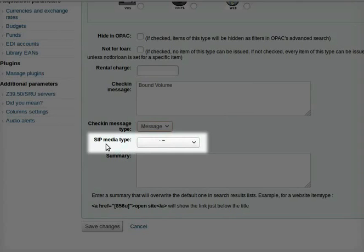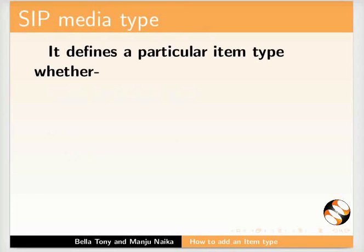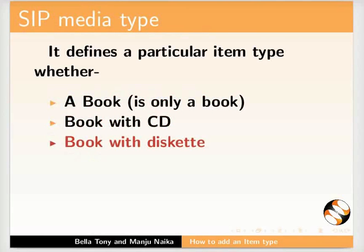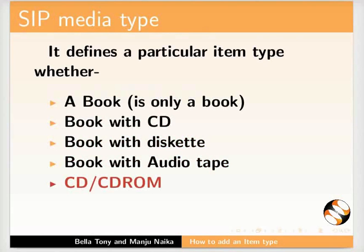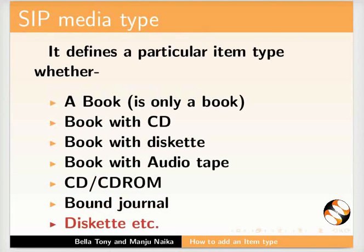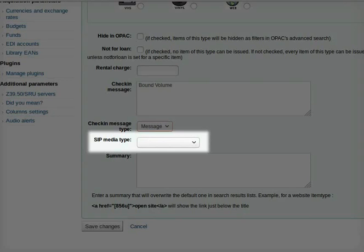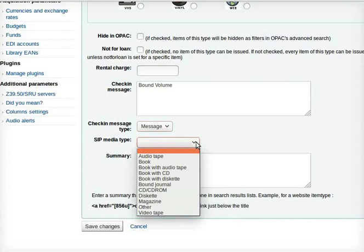Next is SIP media type. It categorically defines a particular item type whether it's a book, a book with a CD, book with disc, book with an audio tape, CD or CD-ROM, bound journal, disc etc. SIP is basically required if the library is using self check in or self check out. For SIP media type I will select bound journal from the drop down.